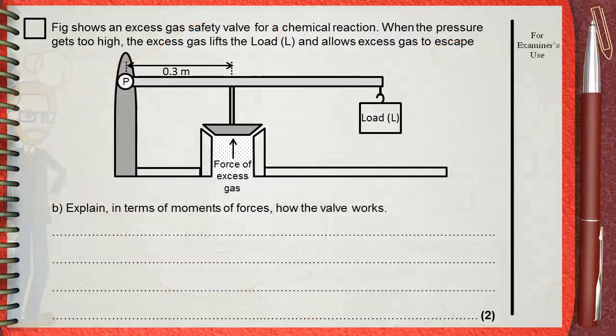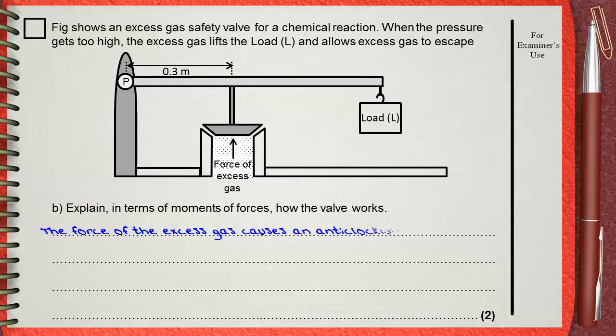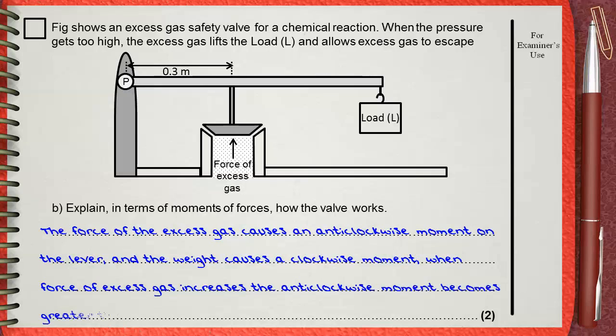So the answer will be: the force of the excess gas causes an anti-clockwise moment on the lever and the weight causes a clockwise moment. When force of excess gas increases, the anti-clockwise moment becomes greater than the clockwise moment.